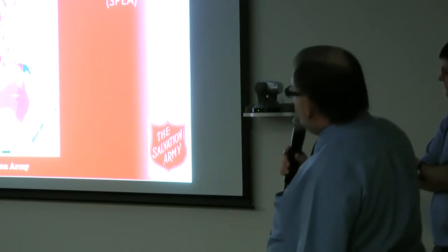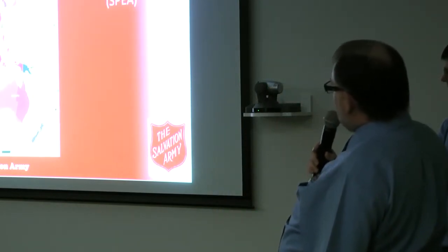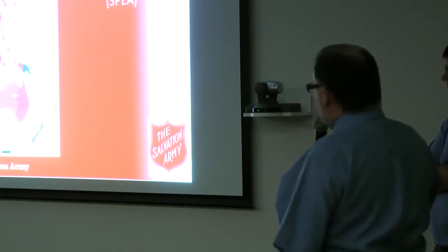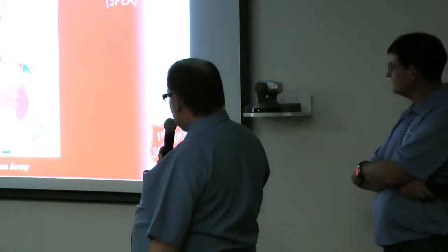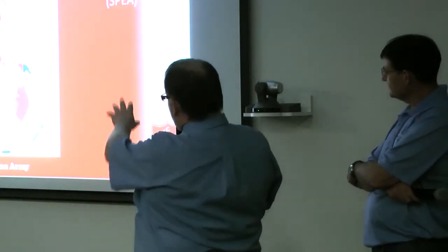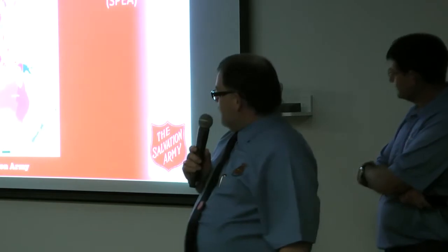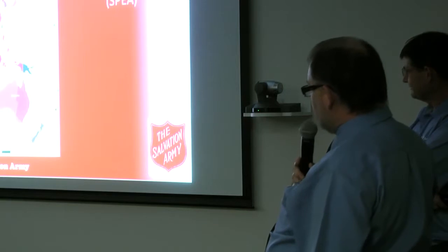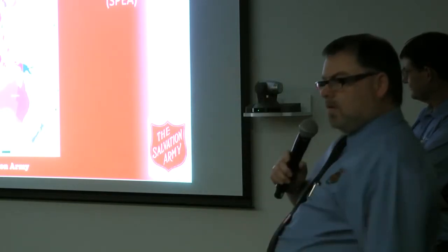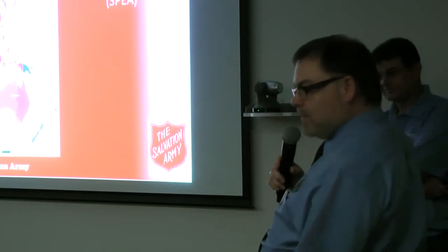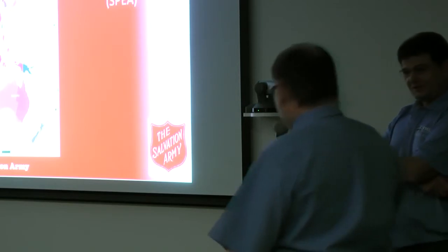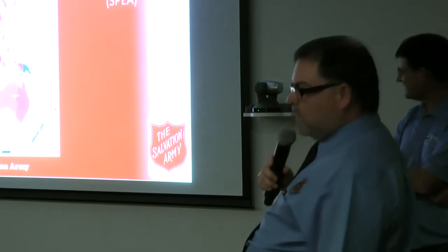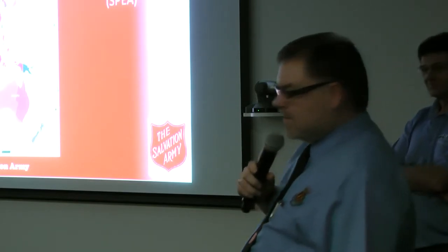I look after the South Pacific and East Asia Zone. All those countries fall under my remit, including Australia — you can see how it's divided in two colours. Tony's area is the biggest of the two. He's part of the Southern Territory, which includes Darwin and the Northern Territories. What we call the South Pacific and East Asia Zone has the acronym SPEAR.